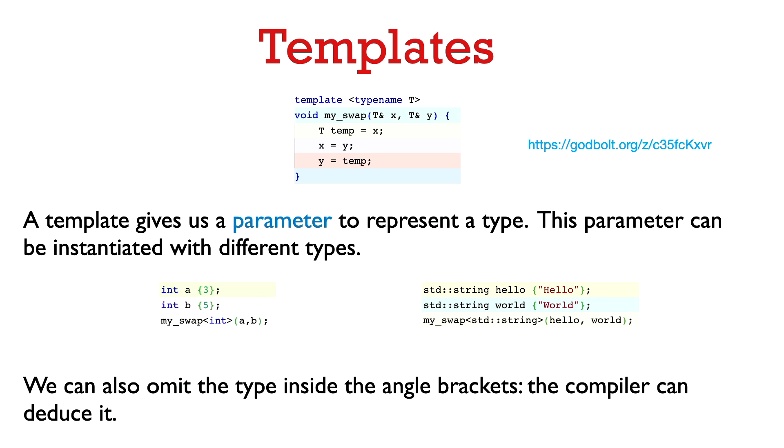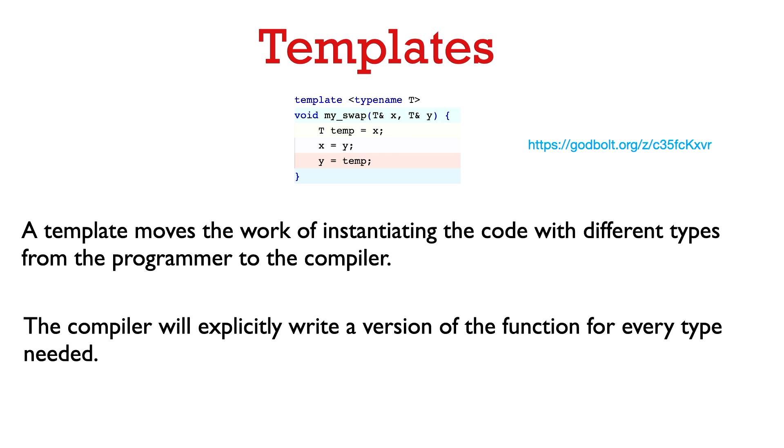Okay, so you don't even need to say the type in angle brackets when you call my_swap. Because the compiler can actually deduce what type it should be. So I don't really need to say my_swap angle bracket int of a comma b. I could just say my_swap of a comma b. And the compiler can deduce that in that case T should stand for int. Because both a and b are ints.